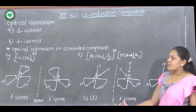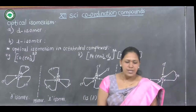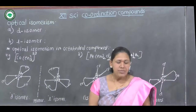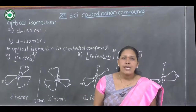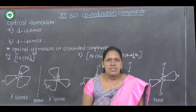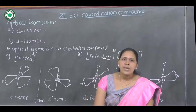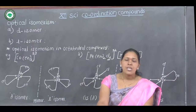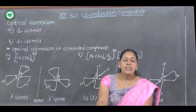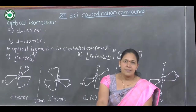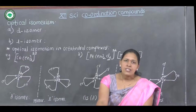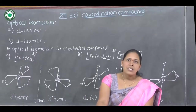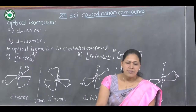Only the cis isomer of this complex shows optical isomerism. Regarding square planar complexes — square planar complexes do not show optical isomerism because they possess an axis of symmetry and a mirror plane.